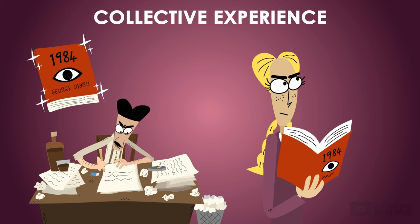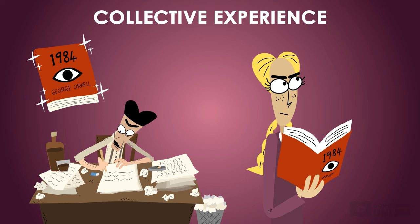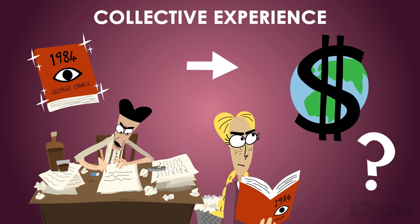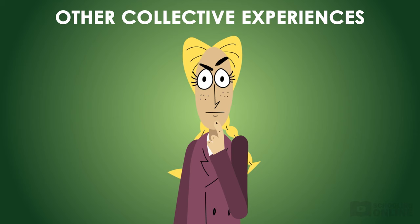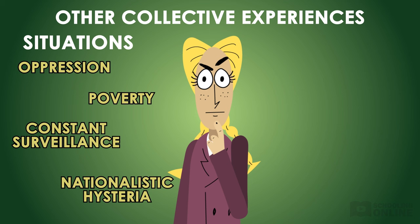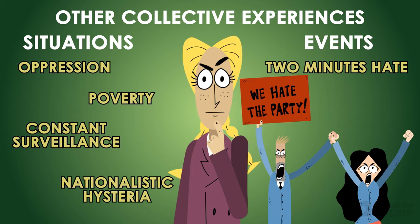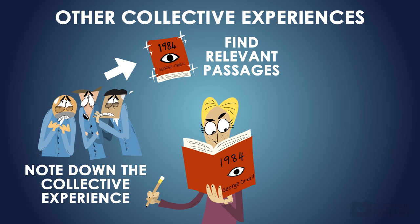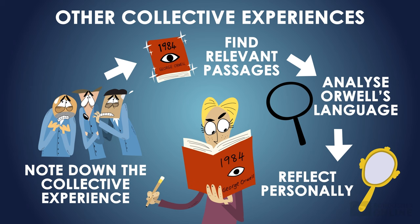If we take a moment to consider Orwell's portrayal of war, we might make some real-world connections. Perhaps our assumptions about the way war is waged might be challenged. Can you think of any past examples of wars that were deliberately started for purely economic reasons? Perhaps Orwell is criticising real governments for their dishonesty and greed. There are also a number of other examples of collective human experiences in the novel — situations like oppression, poverty, constant surveillance and nationalistic hysteria, as well as shared events like the Two Minutes Hate. Take some time now to jot down any other examples you can think of, find the relevant passages, analyse the language, and then personally reflect on how they might relate to your own or others' experiences in the real world.